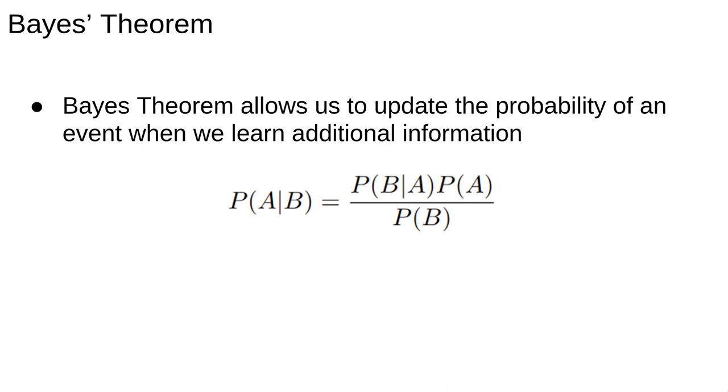It has a very simple mathematical statement. Remember that P(A|B) is read as the probability of A given B. So Bayes' theorem says the probability of A given B is equal to the probability of B given A multiplied by the ratio of the probability of A over the probability of B.